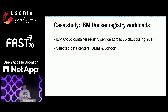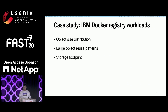Each application will consist of multiple fine-grained microservices in which the I/O behavior is heterogeneous and complex. To quantify this complex I/O behavior in those storage-intensive applications, we select IBM Docker registry traces as an example and conduct a case study. The traces are collected from IBM Cloud Container Registry Service across 75 days during 2017, and we select the two busiest data centers: Dallas and London.